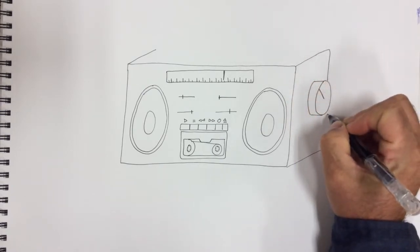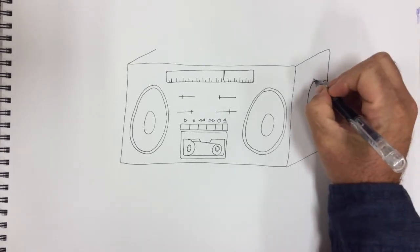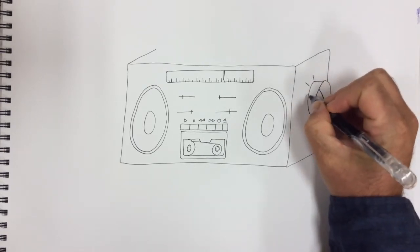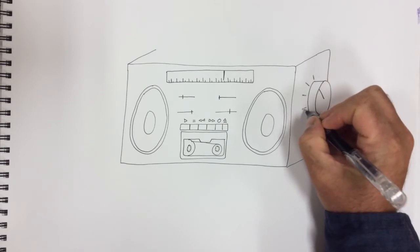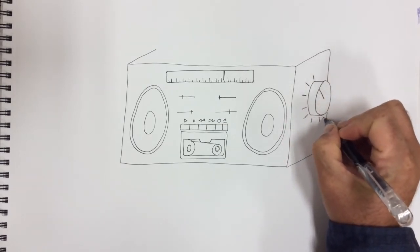I'm gonna close off this side of the box, the boom box. And let's put the indicators for the volume control. So put some lines going out in all directions around the dial.